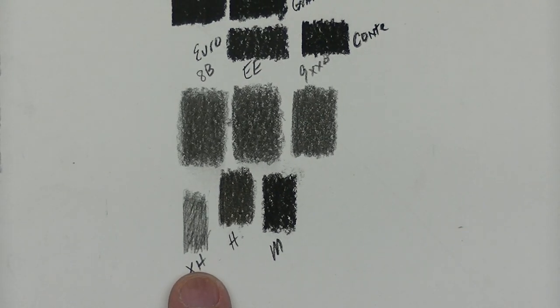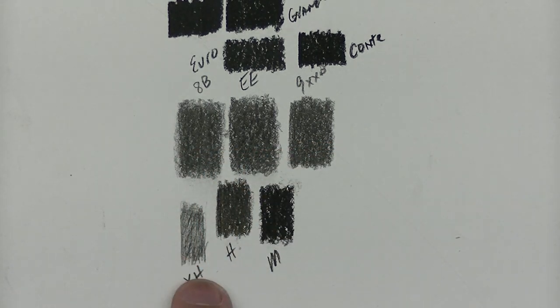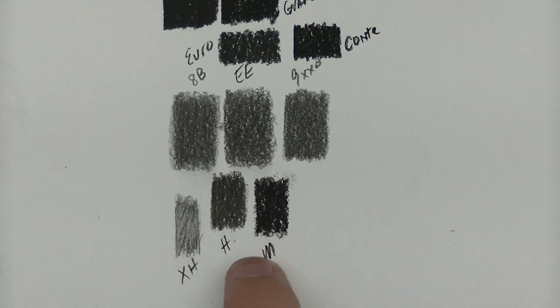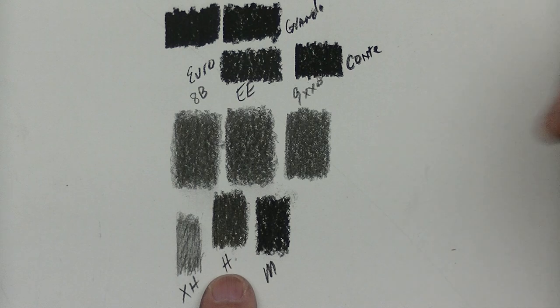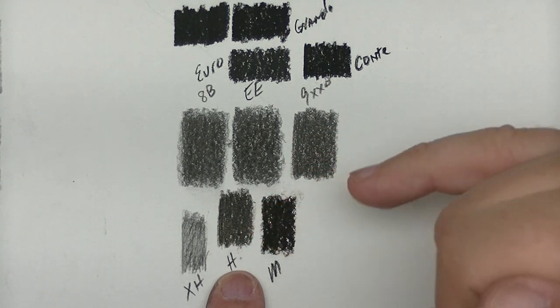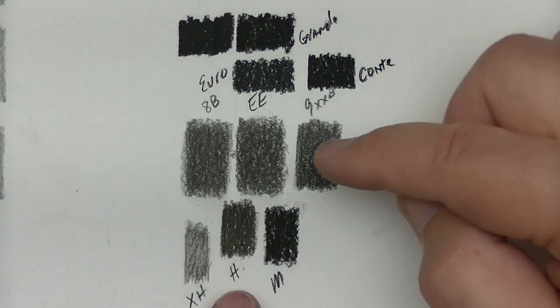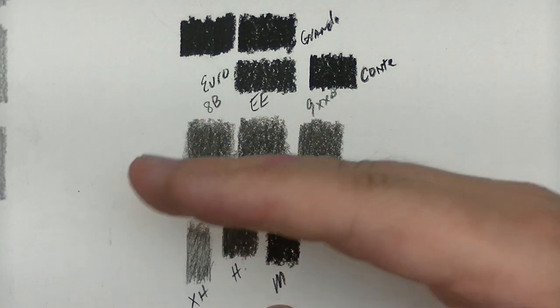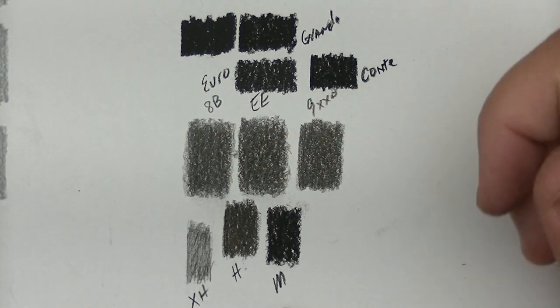And then, as far as getting into now the charcoals, well, interesting, all the hybrids here - the 8, the EE, and the 9 - blow the extra hard charcoal out of the water. So it looks like an HB pencil, so forget it. The medium, or should I say the hard, which is right here, I think it gets close. It's hard to really see. There's no shine on the charcoal, but there will be a little bit on a hybrid because of the graphite component. So, you know, it's pretty much a toss-up. But once you get into the medium charcoal on up, they're all going to be darker than any of the hybrids that we have here.